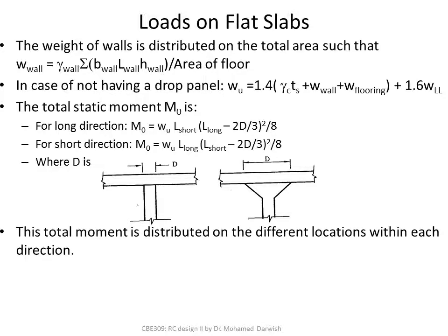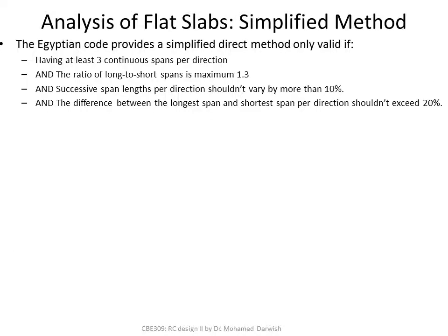This total moment is distributed at different locations within each direction. For the simplified method, the flat slab should have at least three continuous spans per direction, the ratio of long to short span should not exceed 1.3, each two successive spans should not differ by more than 10%, and the difference between the longest and shortest span per direction should not exceed 20%. If any of these conditions is violated, you cannot use this method and must model it on a computer.